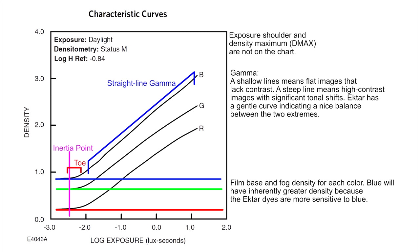Ektar has a nice gentle straight line section on the curve, which indicates a nice tonal range and contrast profile. A flat line would indicate a flat, completely contrastless gray negative. A steep line would indicate a snow and charcoal negative. Balancing the gamma for a gentler slope delivers a nice balance of contrast with detail retention.